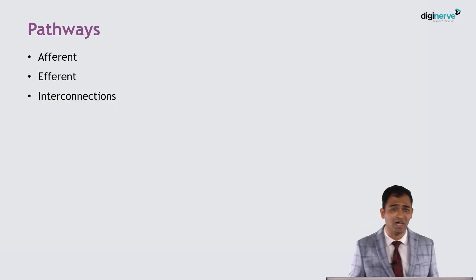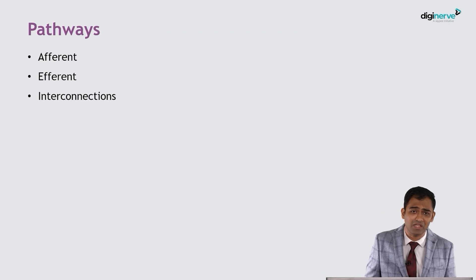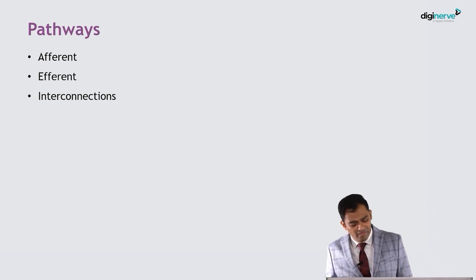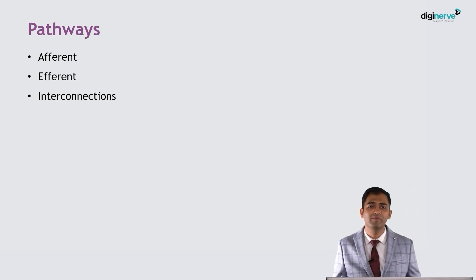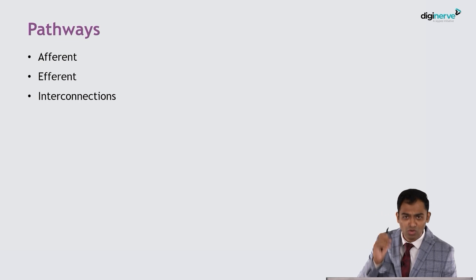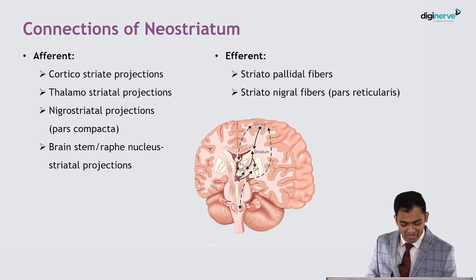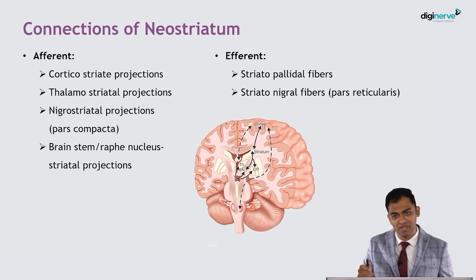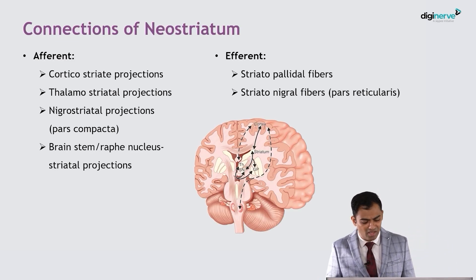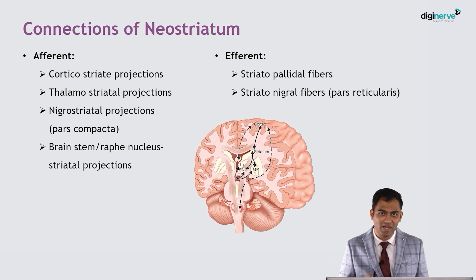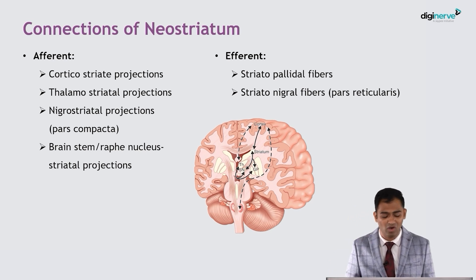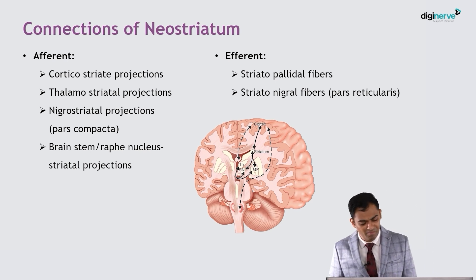Now let us look at the pathways. The pathways are either afferent, efferent, and there will be interconnections. I will go through in brief every single part of the basal ganglia. Now let us look at the most important part — the striatum, or the neostriatum.